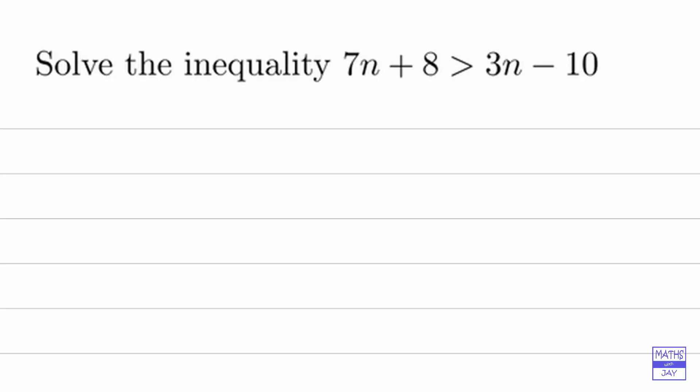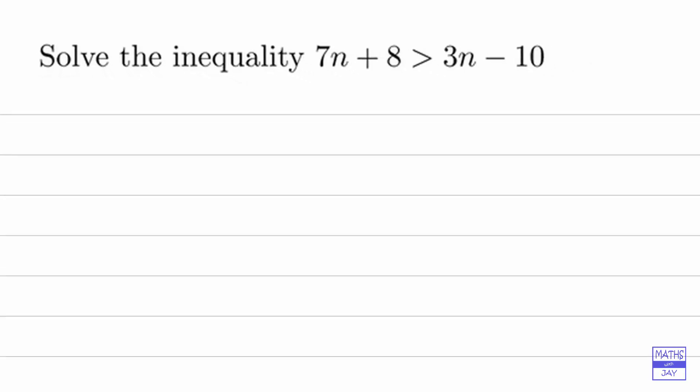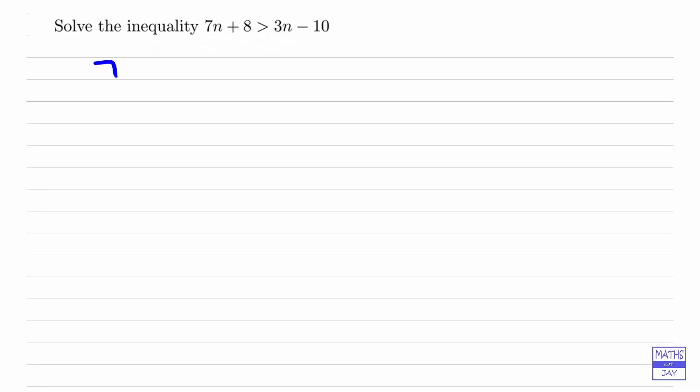So let's just write that down so that we've got that clearly stated. So 7n minus 3n plus 8 is greater than 3n minus 3n minus 10. So we've done the same to both sides. We've subtracted 3n.